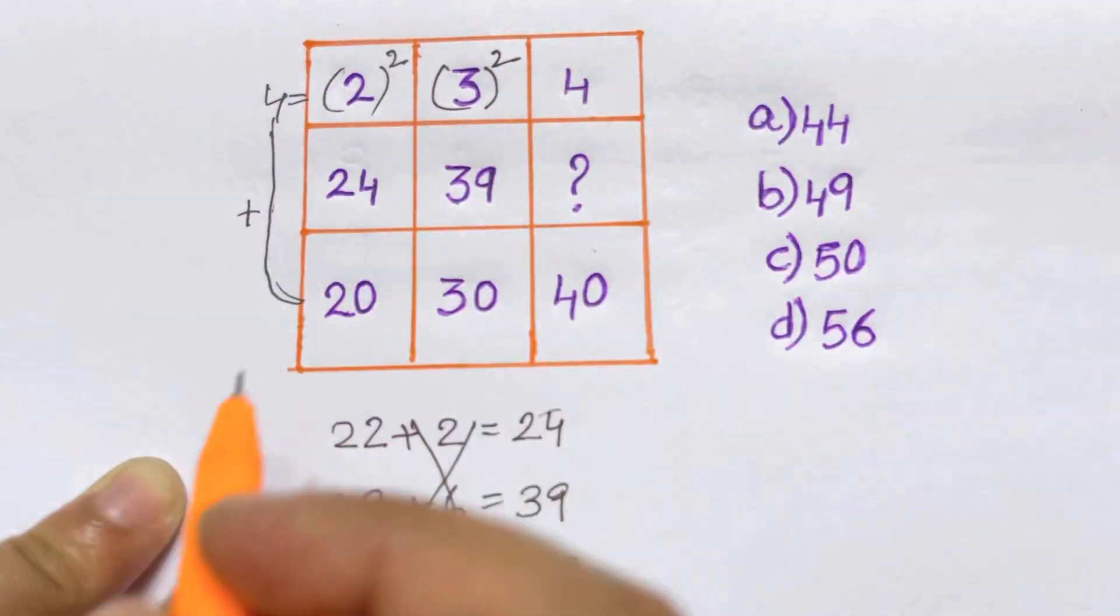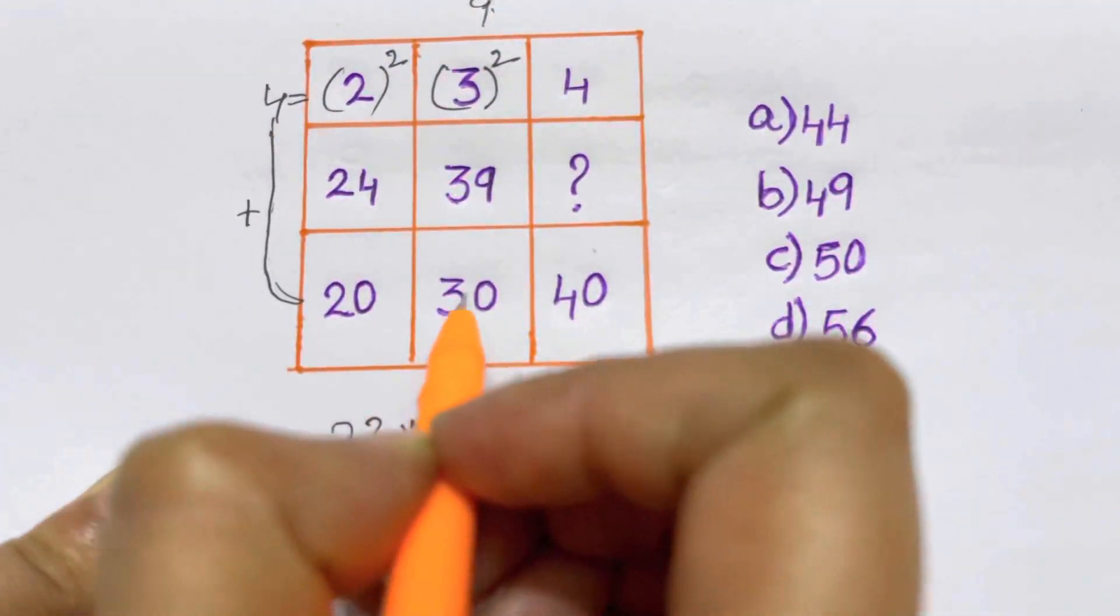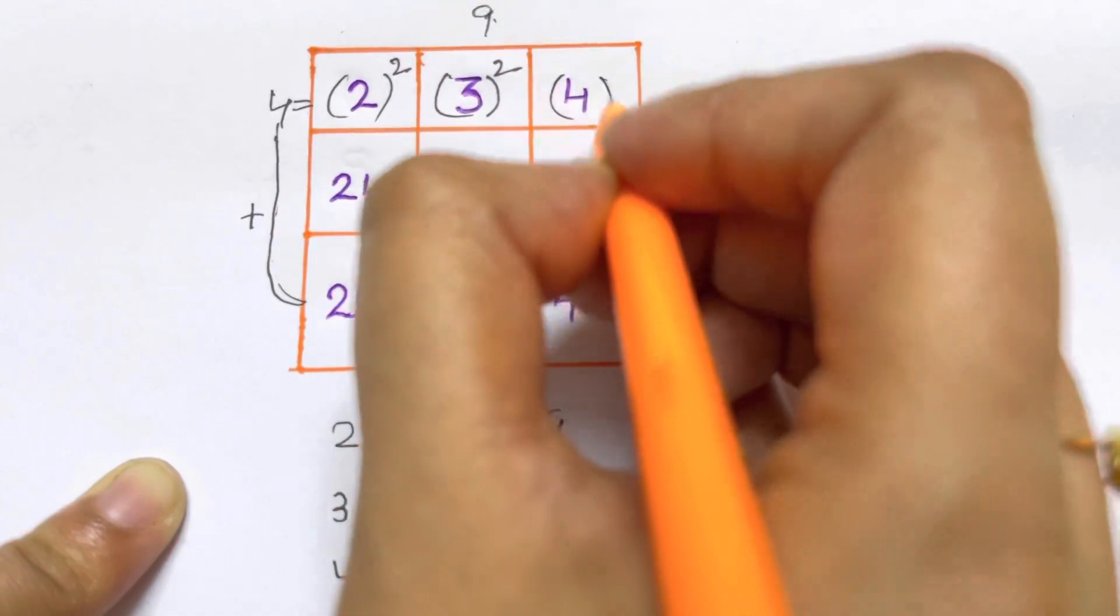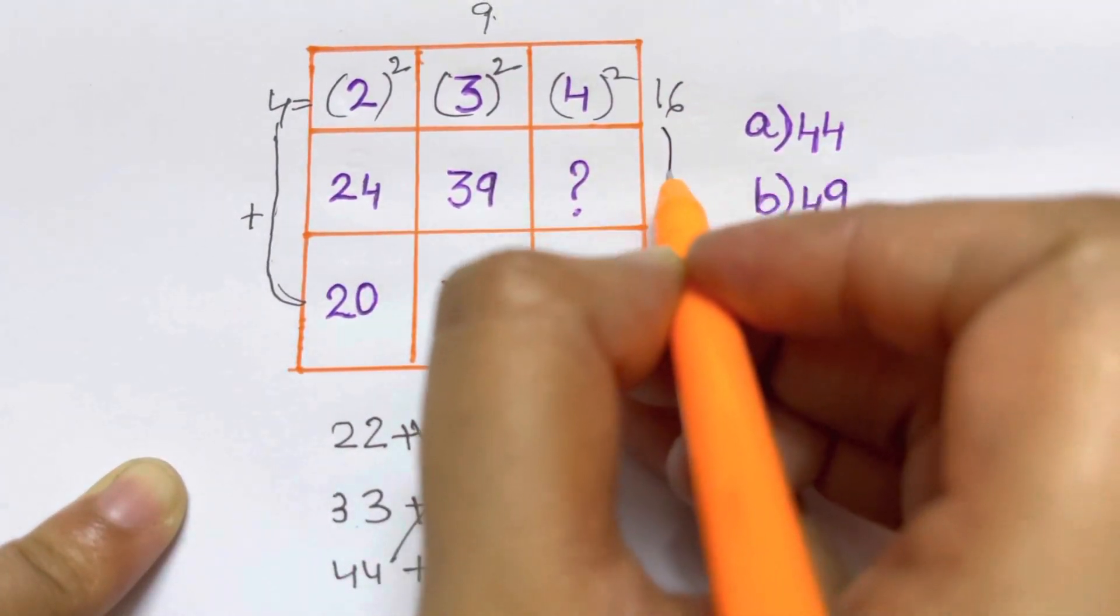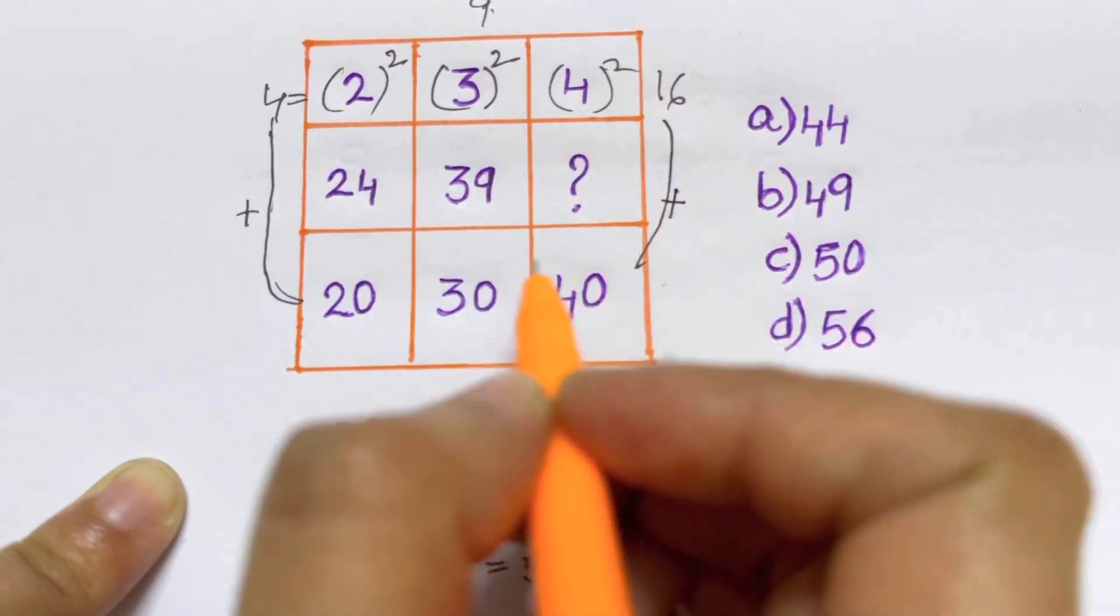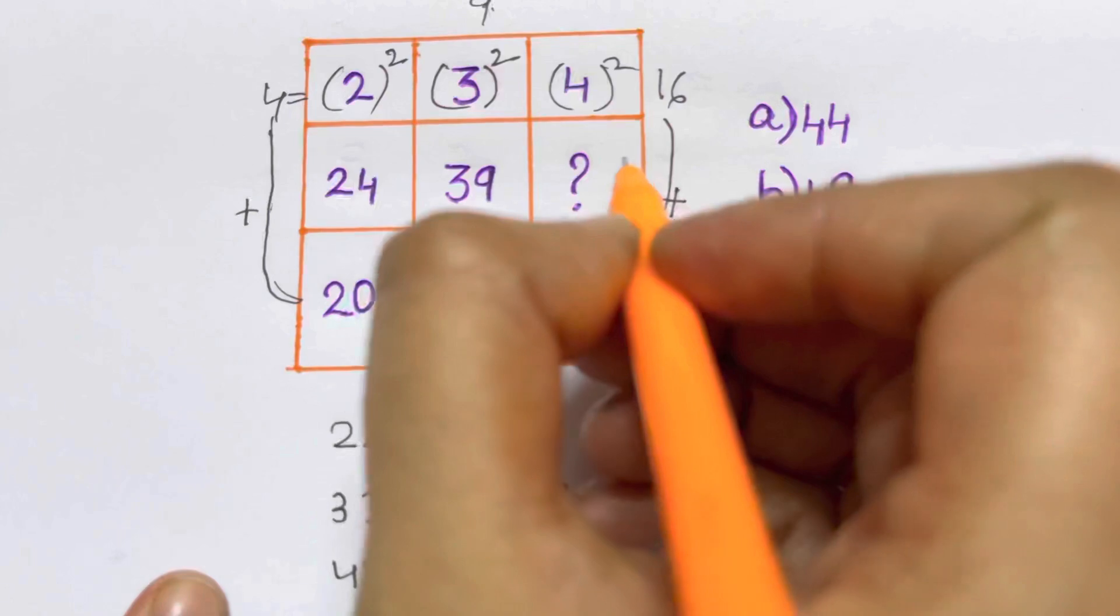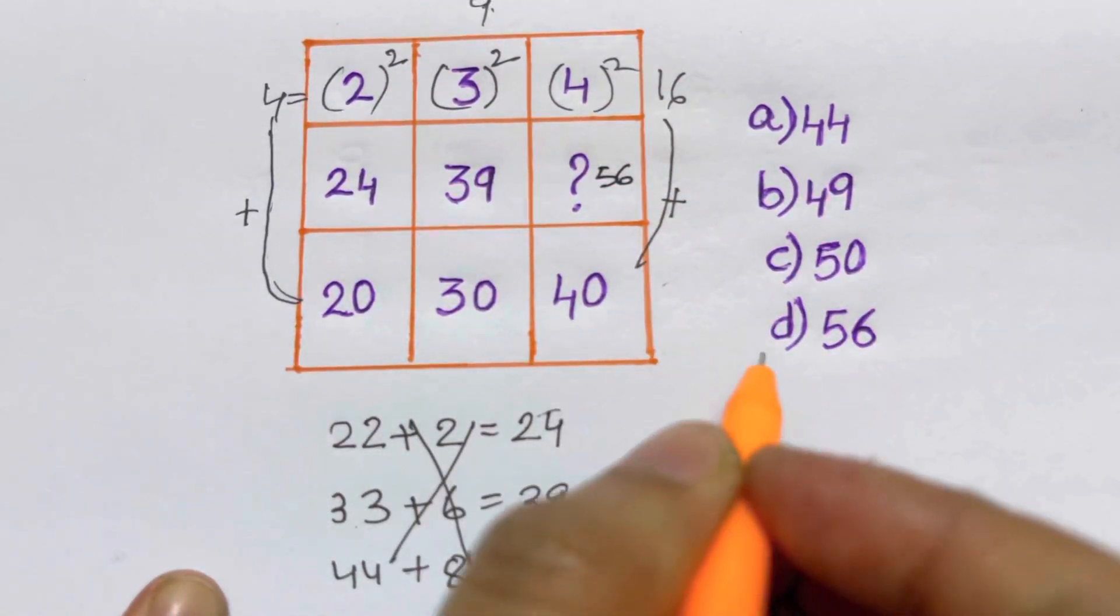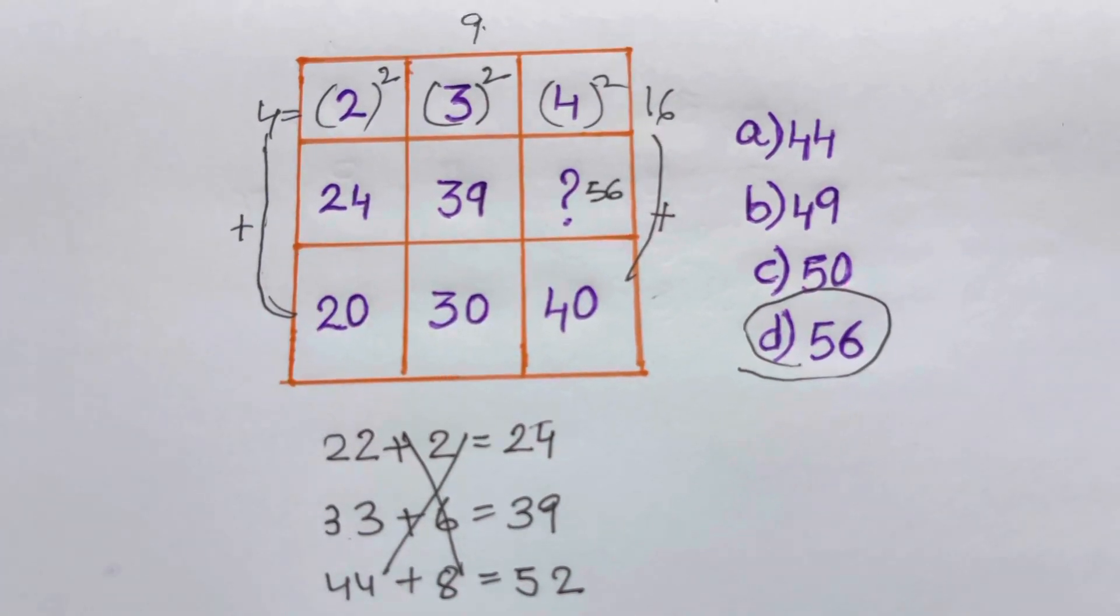Likewise, I'm going to square 3. That 3 squared will give me 9, and 9 plus 30 will give me 39. So here I'm going to square 4, that will give me 16, and 16 plus 40 will just give me 56. And that's your option D.